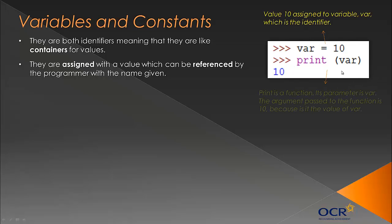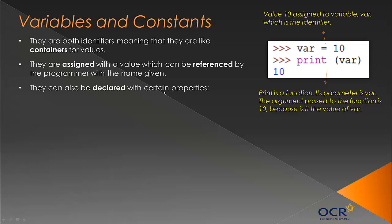Then we've got the function print, and we've got our parameter here for a function, and 'var' is the parameter. It's contained in the parameter which gets passed to the subroutine. The actual argument - the actual bit of data that's passed to the function print - is 10, because it's the value of var. It's good to get in the habit of talking like this, especially in your controlled assessment.